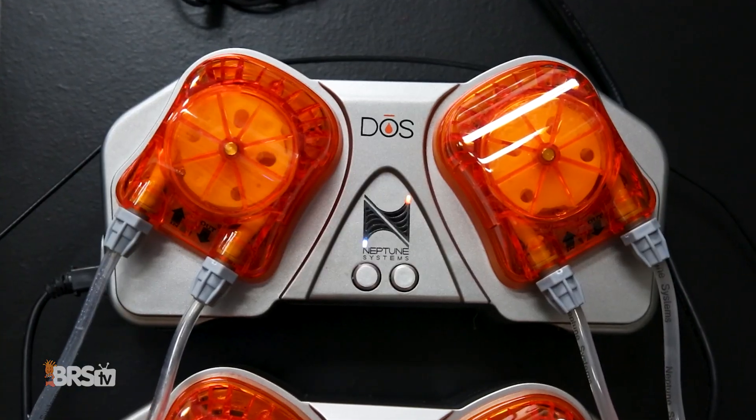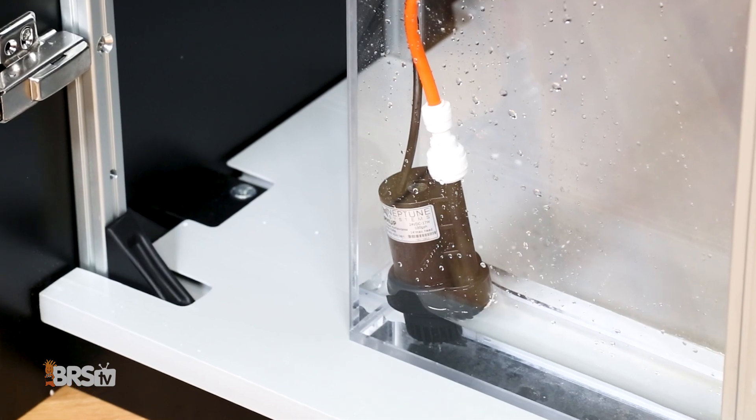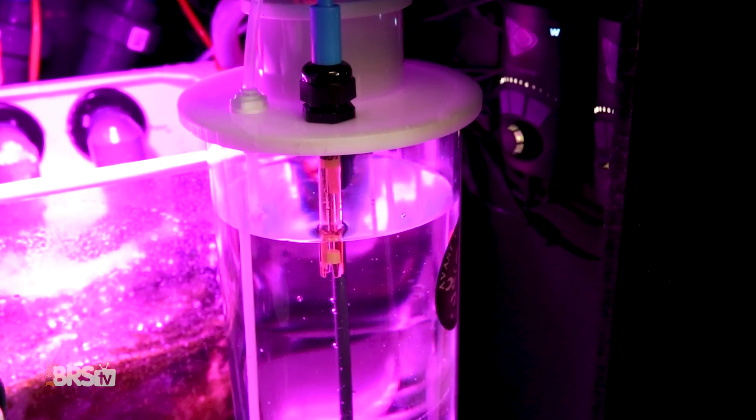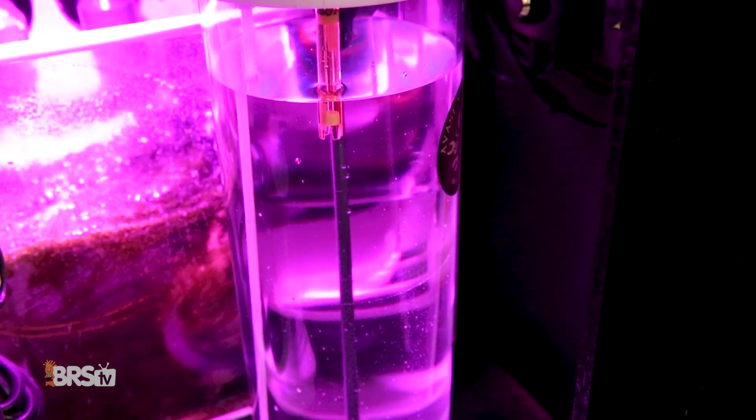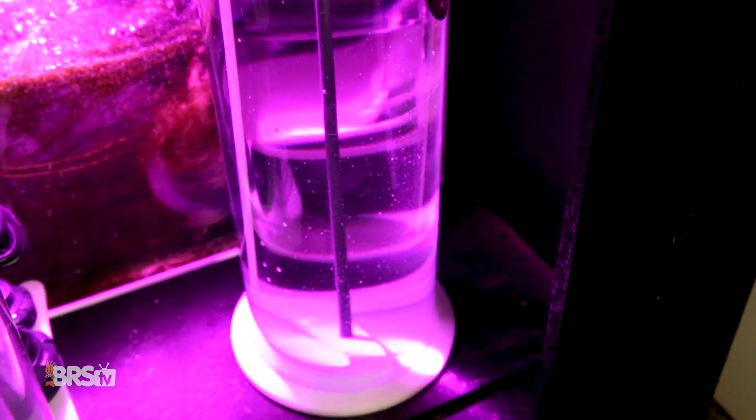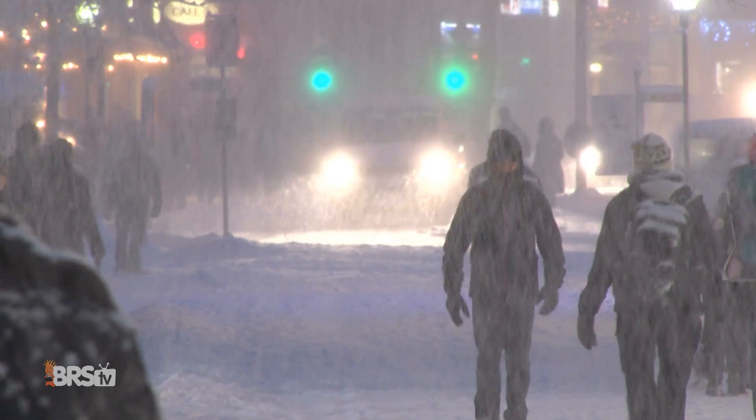And number three is reliability. Using a dosing pump and not your ATO pump to dial in and regulate the right amount of kalkwasser to dose your tank is much more reliable than leaving it up to your tank's ever-changing evaporation rates, which can vary drastically from season to season.